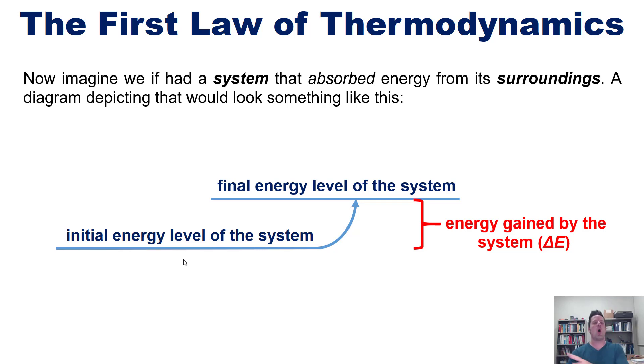We see then that the system's total change in energy or delta E is equal to its final energy level, whatever that is, minus its initial energy level. Let's take this information and move it up top.